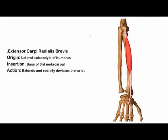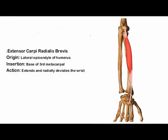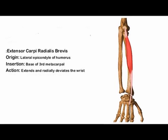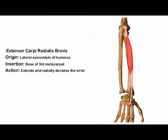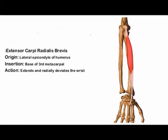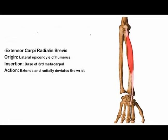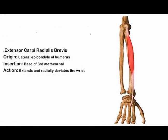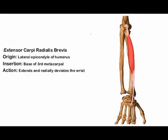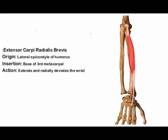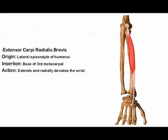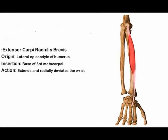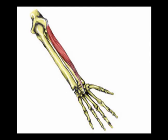So again, the extensor carpi radialis brevis is often abbreviated to the ECRB and the concentric actions are wrist extension and radial deviation.